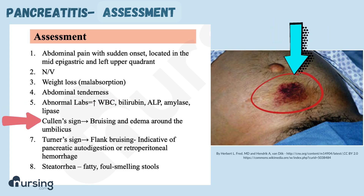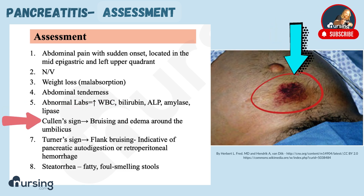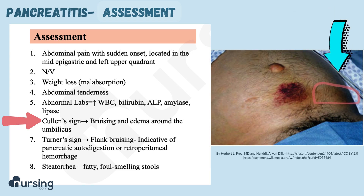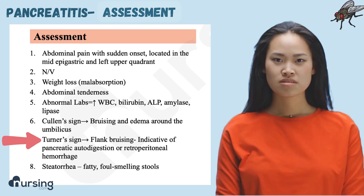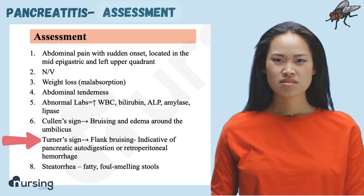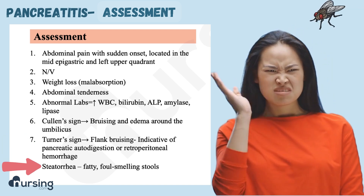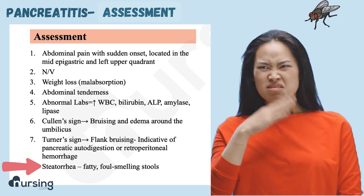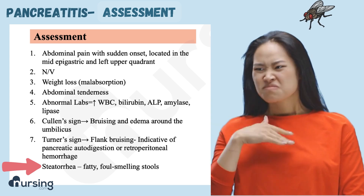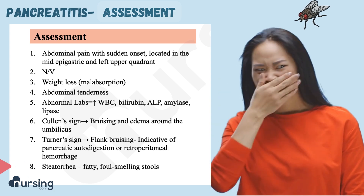You're also going to see Cullen's sign, which is bruising around the umbilicus, like you can see here. And Grey Turner sign, which is bruising on the flank. Finally, you're going to see steatorrhea, which is fatty, foul-smelling stools. If you've ever smelled this before, you're never going to forget it.